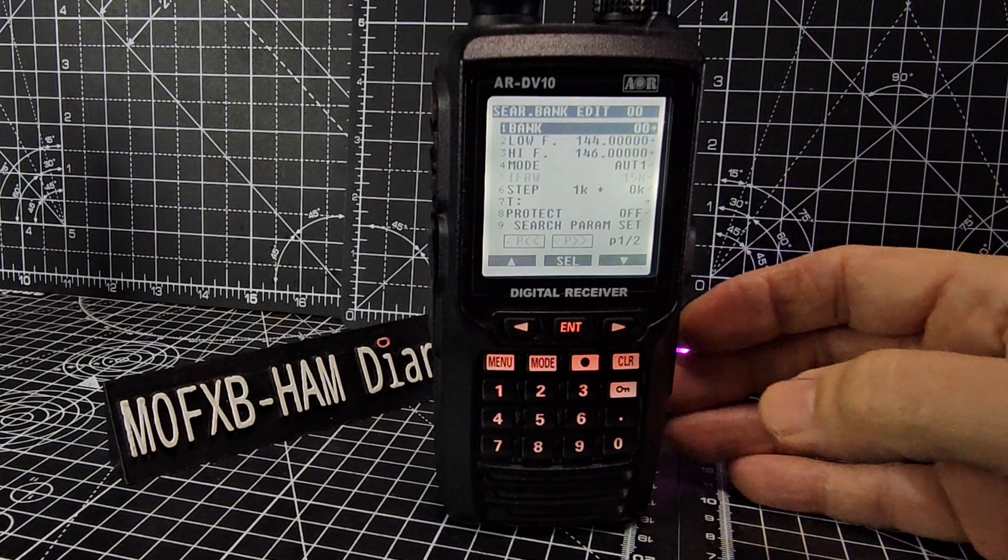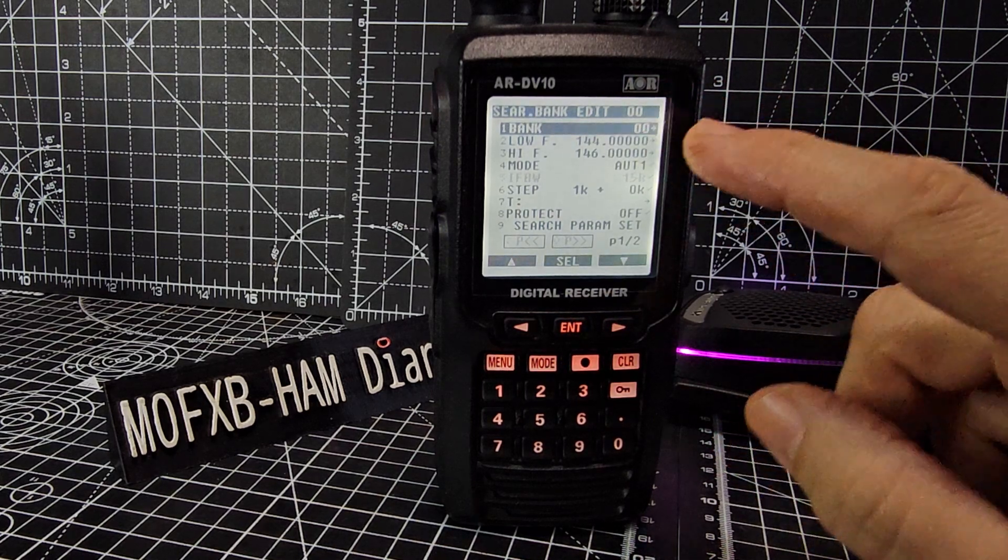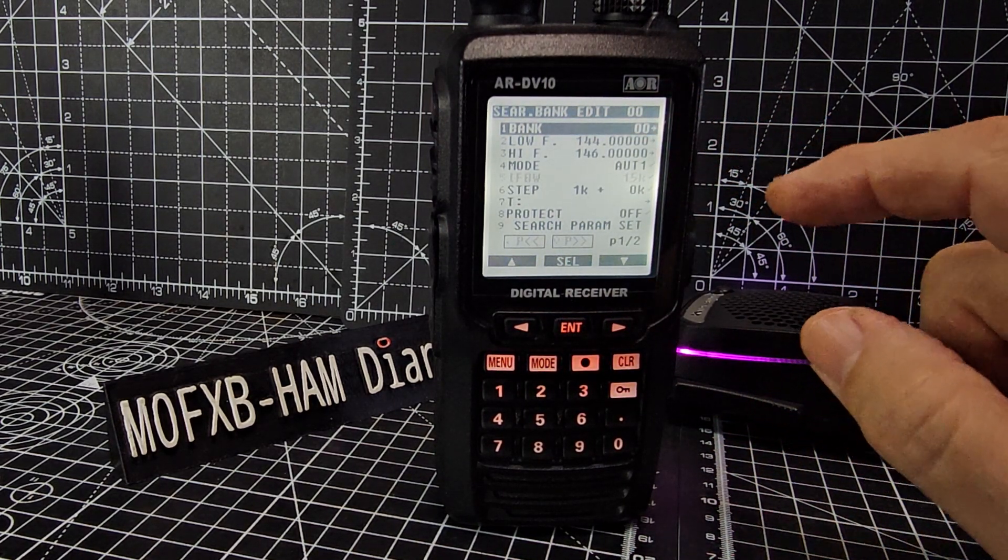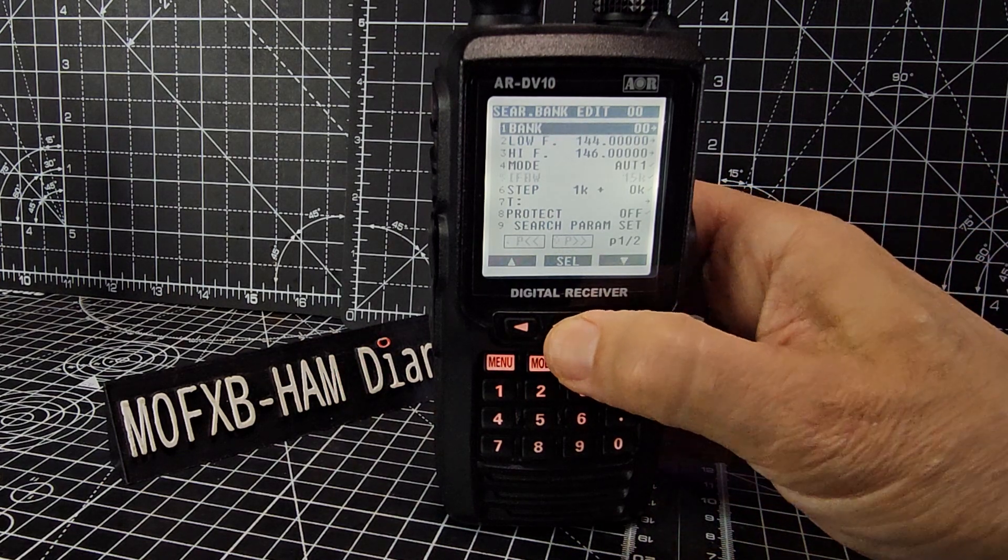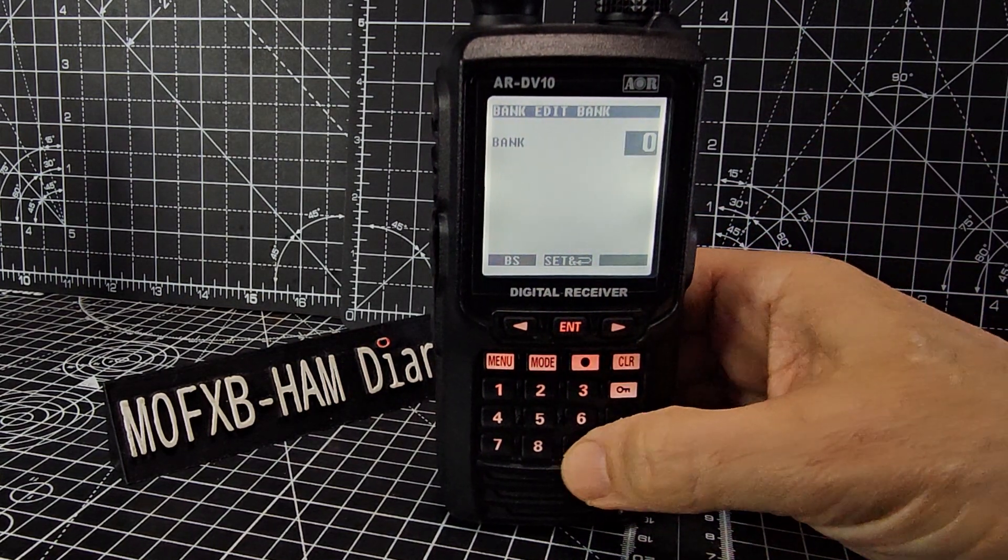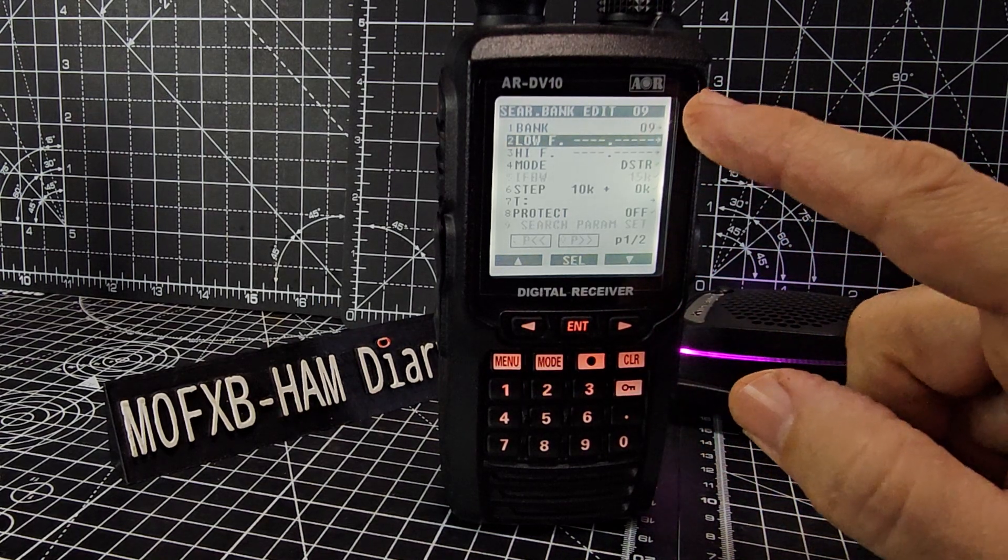And now we need to create a bank. So we can search a bank that we've already created, but if we're going to create a new one for airband we need to go across to number 8 and press enter. And you have got this list now. The next thing we need to do is choose which bank number, because that's very important for finding it. Let's just go enter and we'll create a random one. We'll go 09. Okay, so we're now in bank 9.